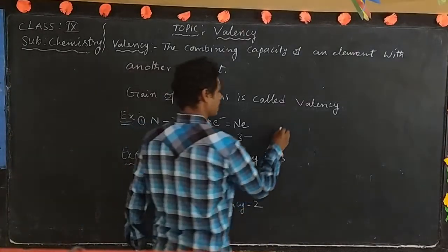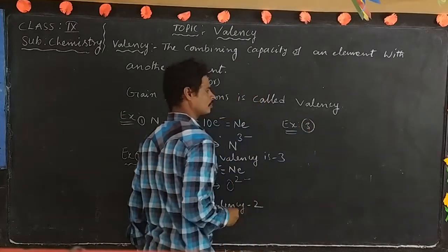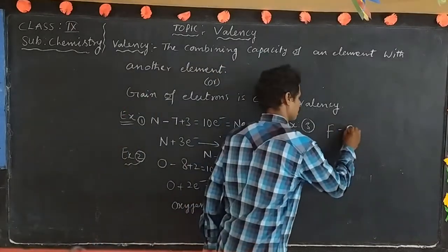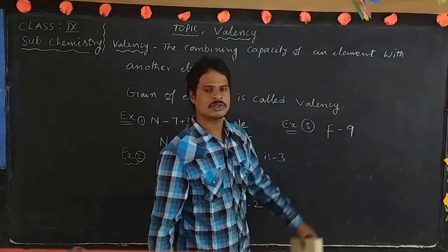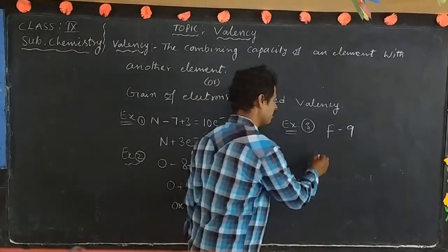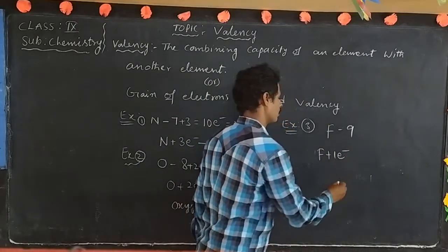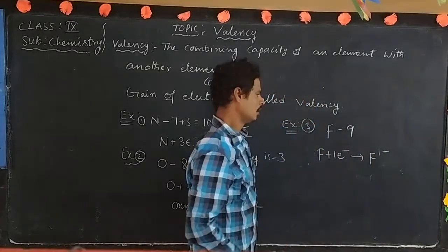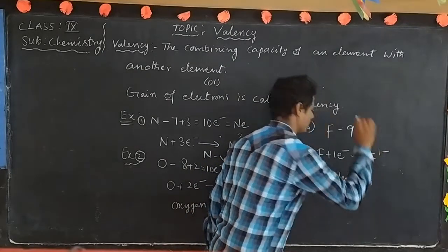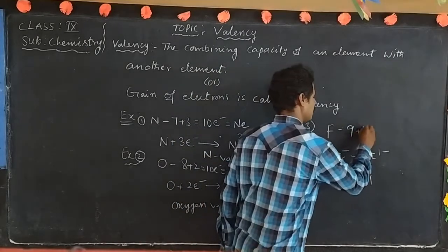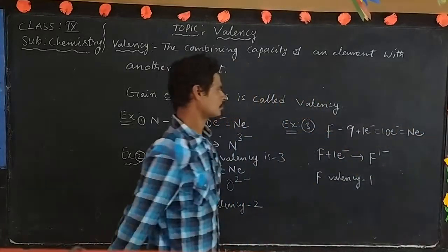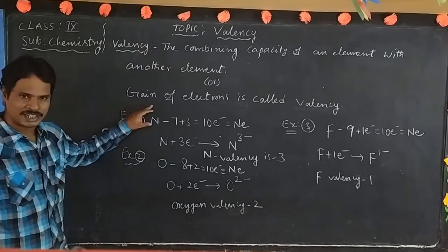Example three: fluorine, atomic number 9. Fluorine needs to reach neon's electronic configuration. How many electrons are required? One electron. Fluorine gains 1 electron to become F⁻. So fluorine valency is 1. That gives 9 + 1 = 10 electrons, equal to neon's configuration.